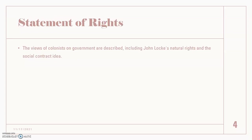The statement of rights — these are basically the views of the colonists on the government and how it should be described, almost like an ideal type of government. It includes famous Enlightenment thinkers' ideas, such as John Locke's natural rights and the social contract idea. Remember, this is not the same as the Constitution. The Constitution includes separation of power and unalienable rights, whereas the Declaration of Independence has a statement of rights saying this is something you're supposed to be giving us — you violated that, and that's another reason for breaking away.